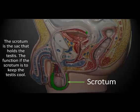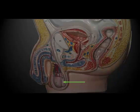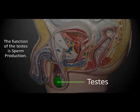The testes lie in a sack called the scrotum. The function of the scrotum is to keep the testes cool. This is needed to ensure proper sperm production. The function of the testes is sperm production.